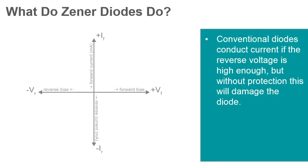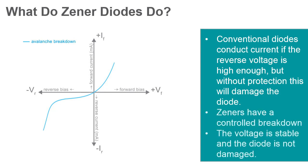A conventional diode will allow current to flow if it is reverse biased above its reverse breakdown voltage. When this happens, a conventional diode is subject to high current. Unless protected by other circuitry, a conventional diode will overheat and be permanently damaged when operated in this way. A Zener diode is specifically designed to have a lower breakdown voltage than a conventional diode, which allows it to have a controlled breakdown, keeping the voltage across the Zener close to the breakdown voltage.